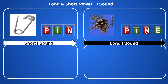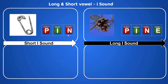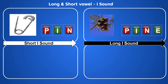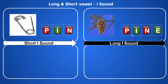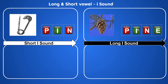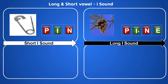So comparing: P-I-N is 'pin' — that is the short sound of alphabet I. P-I-N-E is 'pine' — that is the long sound of alphabet I.